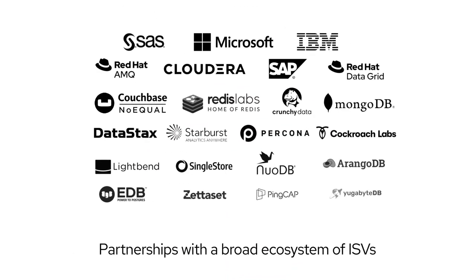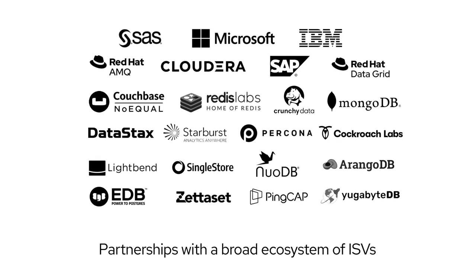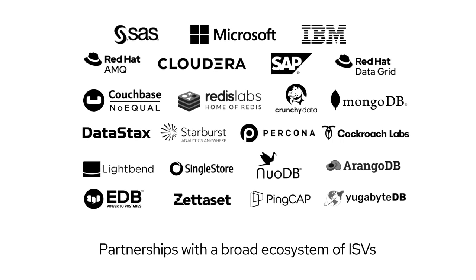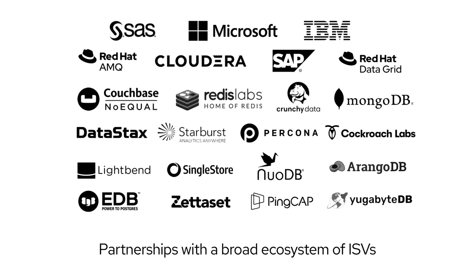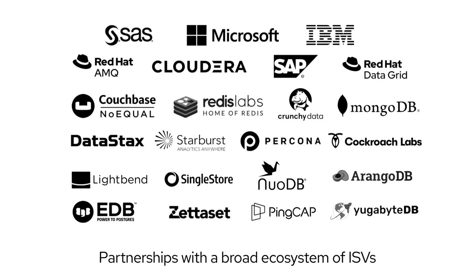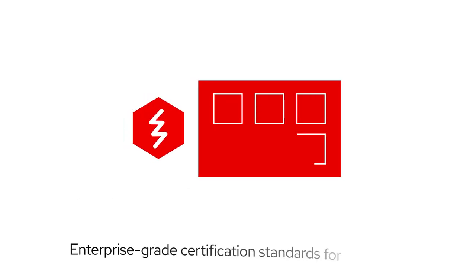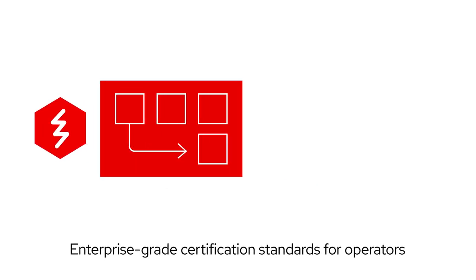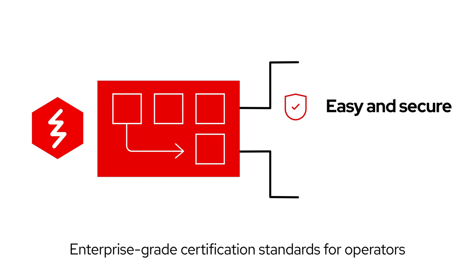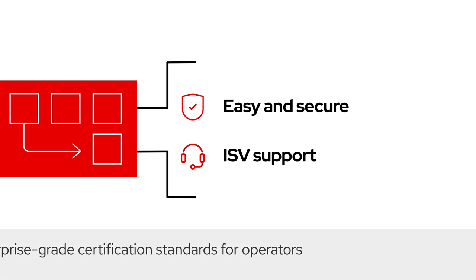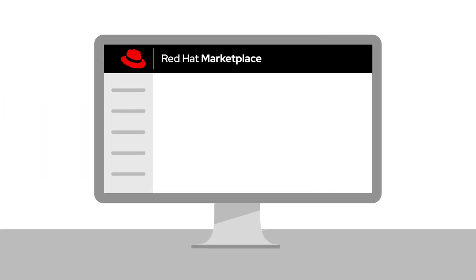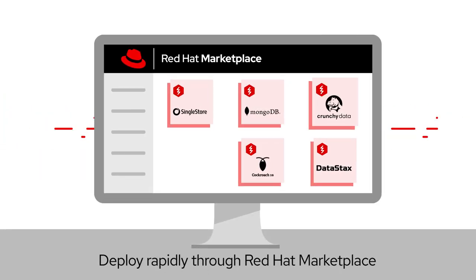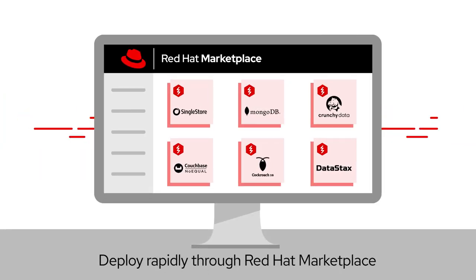Red Hat also has strategic partnerships with key data ISVs to ensure ready availability of Kubernetes operators for rapid deployment of data workloads. These operators are certified across various certification standards, assuring easy and secure deployment and support from the ISVs. And Red Hat Marketplace makes it easy to purchase and deploy certified operators on OpenShift, anytime, anywhere.